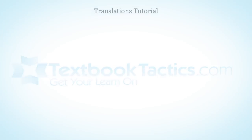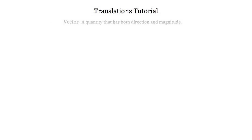This is a translations tutorial. When we deal with translations in geometry, we're always dealing with vectors. A vector is a quantity that has both direction and magnitude. So when we translate a figure in geometry, we're translating it in one particular direction at some magnitude — some distance along that direction.